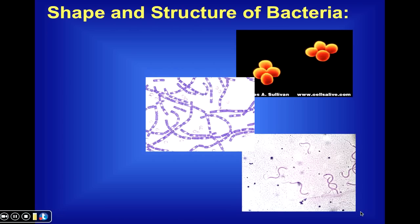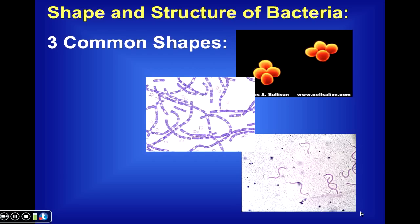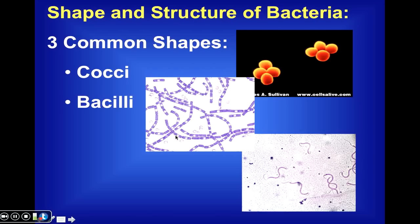In terms of the shape and structure of prokaryotes, we typically find bacteria in one of three different shapes. Some cells are spherical in nature — that's referred to as the cocci shape. Others are rod-shaped or bar-shaped — those are bacilli. And finally, some bacteria are spiral-shaped, referred to as spirilli.